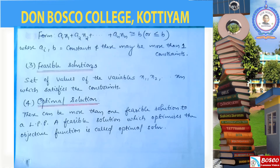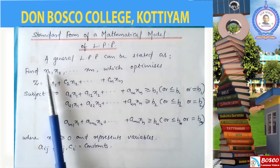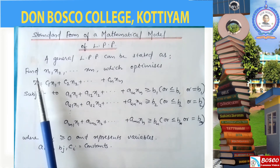The standard form of a mathematical model of LPP uses the four ingredients: objective function, linear constraints, feasible solution, and optimal solution. A word problem is converted into this standard form of a mathematical model of LPP. A linear programming problem can be stated as a mathematical writing.